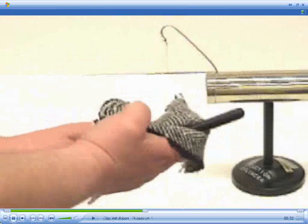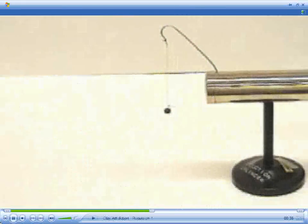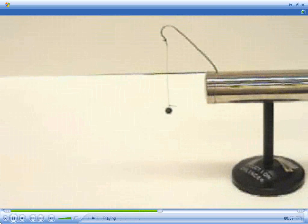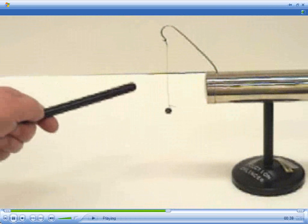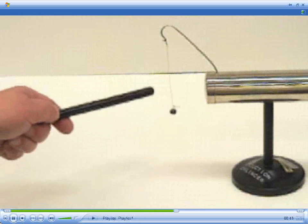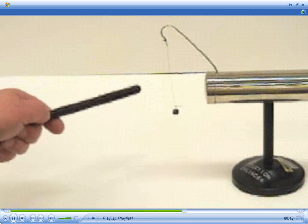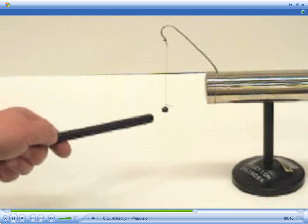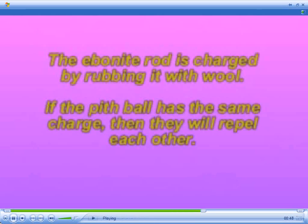With the ebonite rod being charged, let's see what happens. As you can see, there is attraction between the two. The pith ball is still neutral, but now there is attraction.